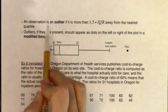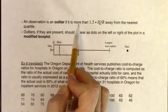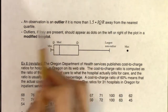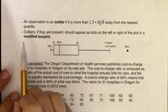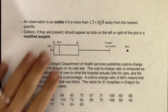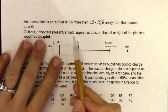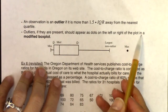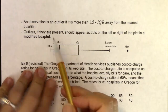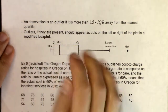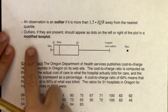An observation is an outlier if it is more than one and a half times the IQR away from the nearest quartile — or more than one and a half IQRs away from a quartile. Outliers, if they are present, should appear as dots on the left or right of the plot in a modified box plot. When you see the term 'modified,' it means we're showing outliers.